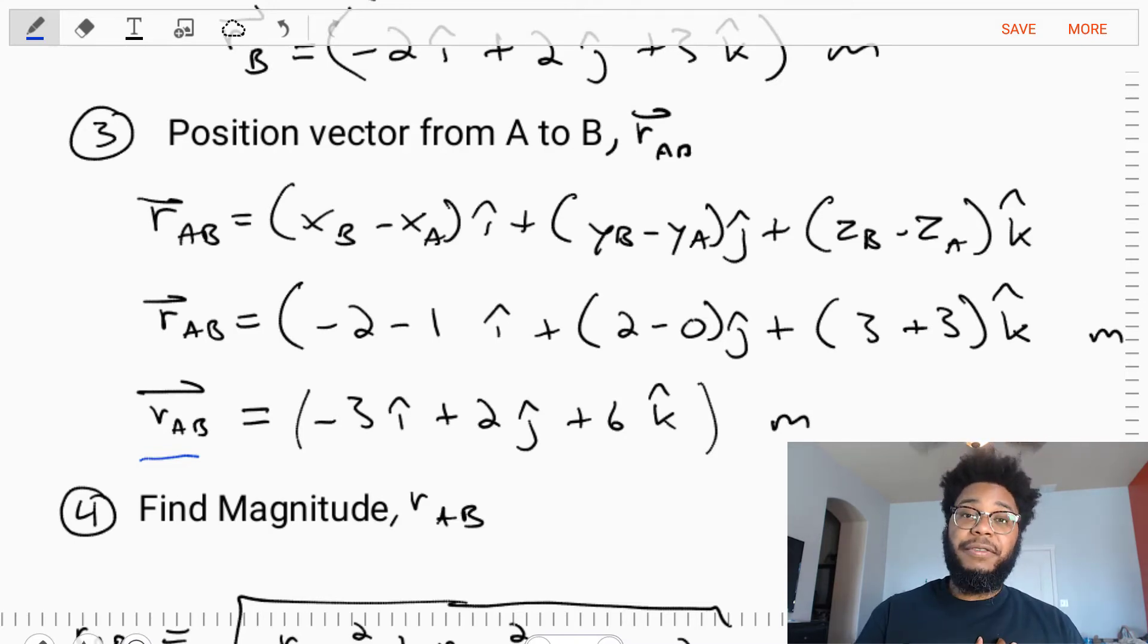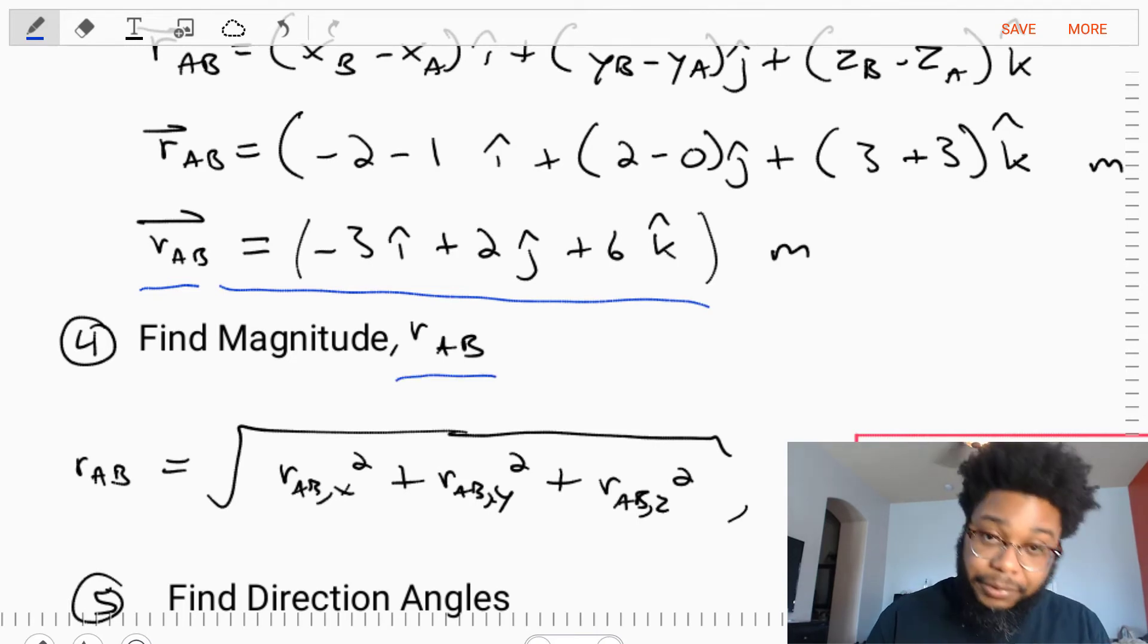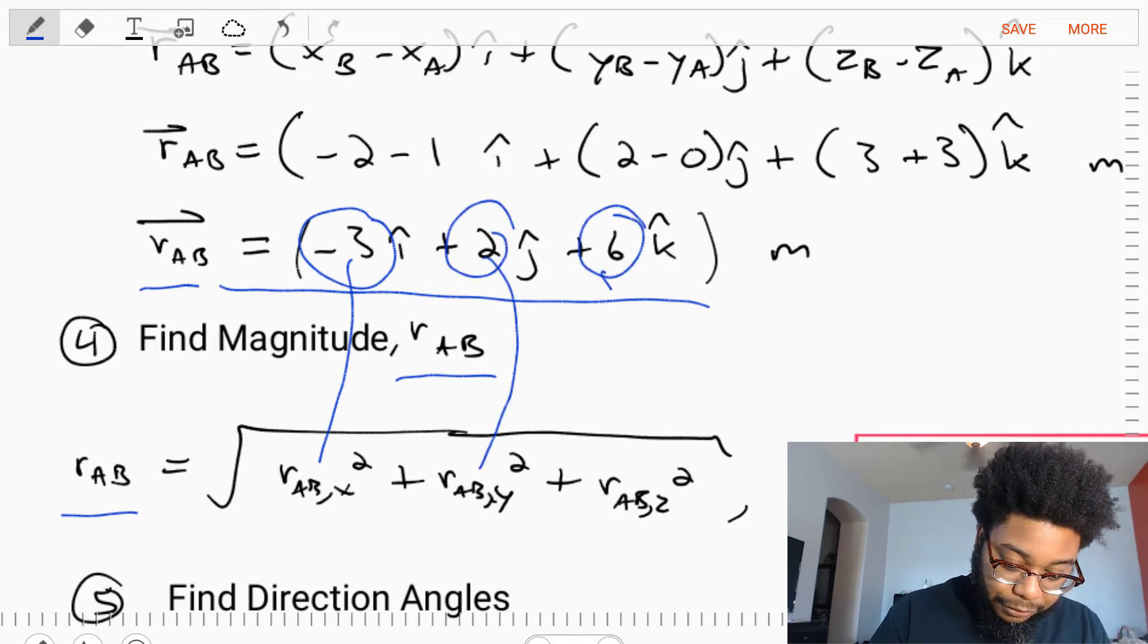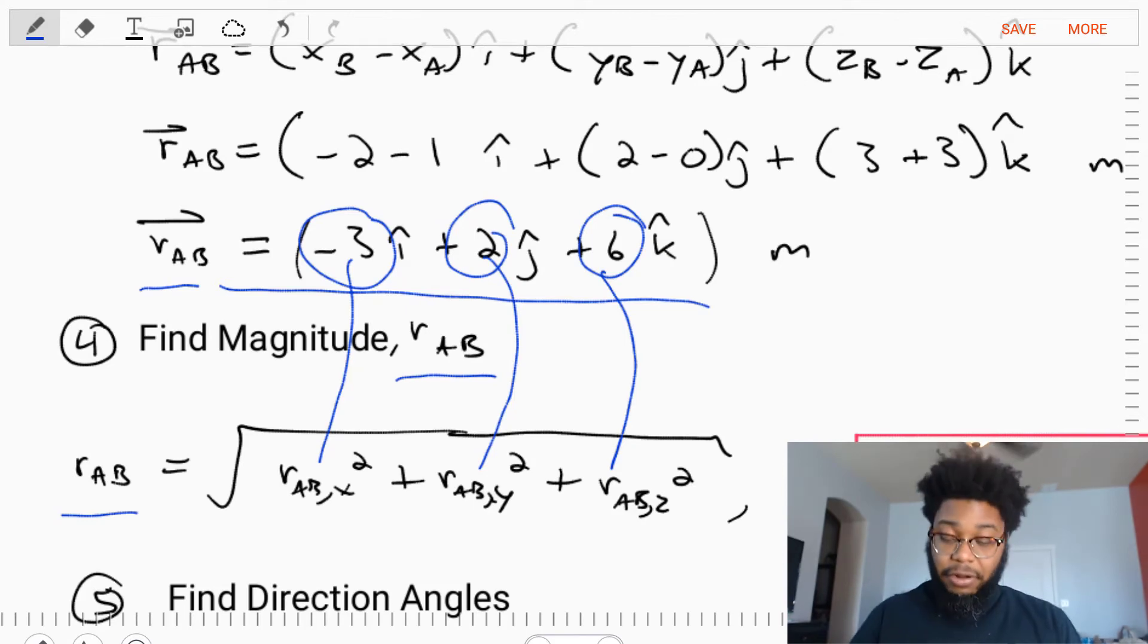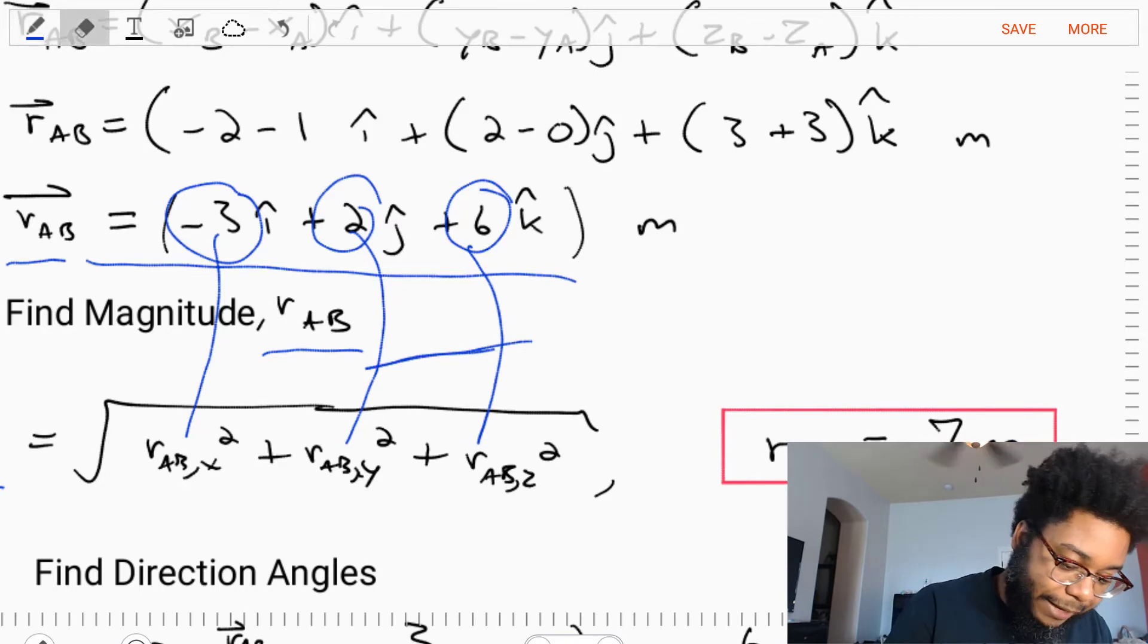What we're asked to find is the length of that vector and its direction. Let's find the length first. The length of the vector equals its magnitude. The magnitude can be found as the square root of the squared terms: the square root of the x component squared plus the y component squared plus the z component squared. If we take each component and plug it in, we'll find the length of our vector is equal to 7 meters. Now we know the length of this rubber band.